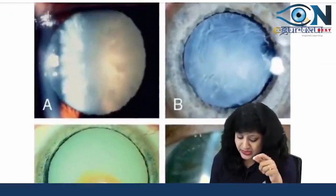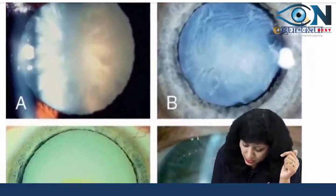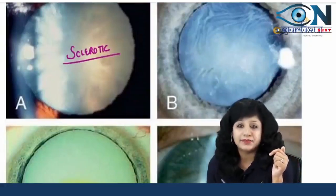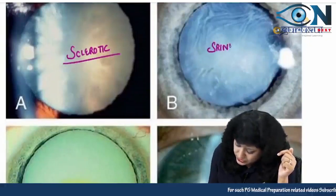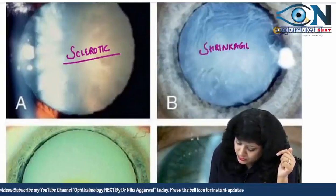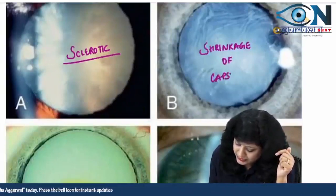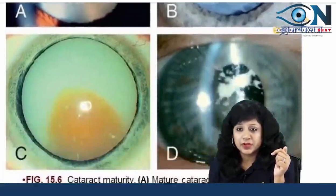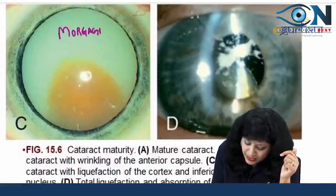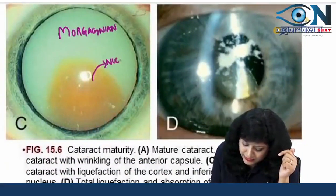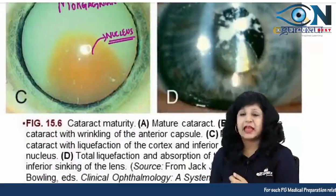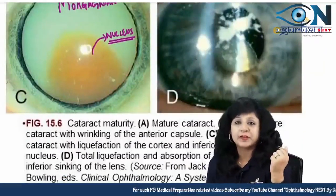So phacomorphic glaucoma is due to changes in morphology of the lens, and phacolytic glaucoma is due to cortex protein leakage blocking the trabecular meshwork. In the sclerotic type you can see the shrinkage of the capsule, while in the Morgagnian type you can see the nucleus settling at the bottom — and the proteins coming out can cause phacolytic glaucoma.